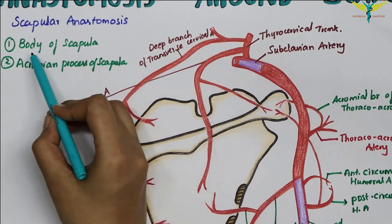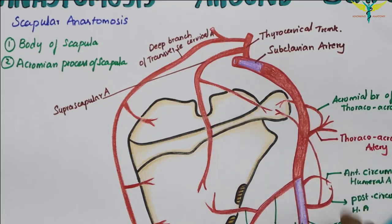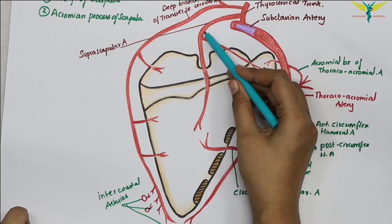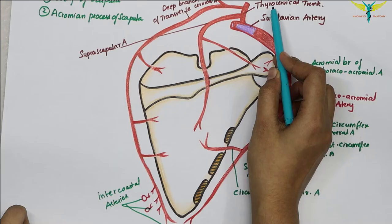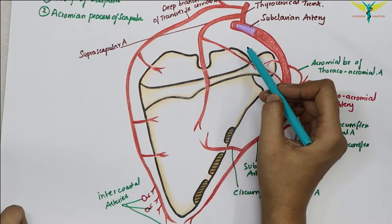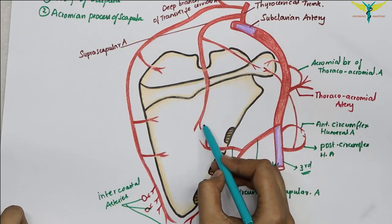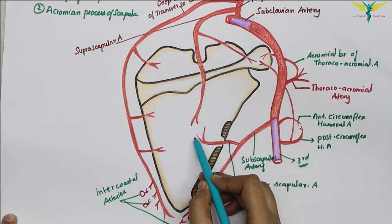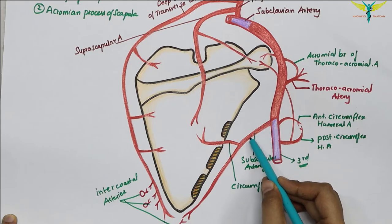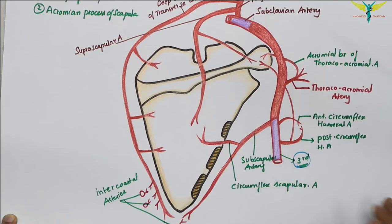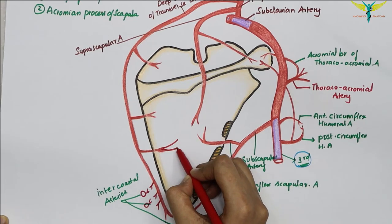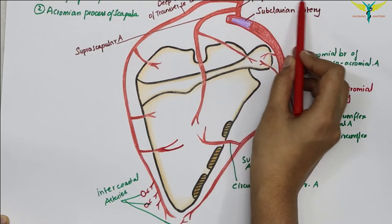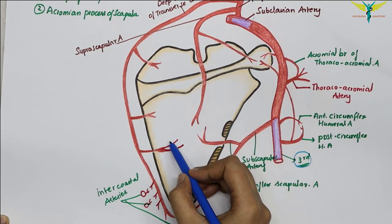Now let's see the anastomosis around the body of the scapula. This anastomosis occurs between the suprascapular artery, which is a branch of the thyrocervical trunk arising from the first part of the subclavian artery, and the circumflex scapular artery, which is a branch of the subscapular artery from the third part of the axillary artery, and by the deep branch of the transverse cervical artery, which is also a branch of the thyrocervical trunk. The anastomosis around the body of the scapula is seen here.